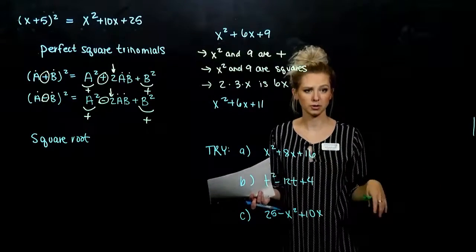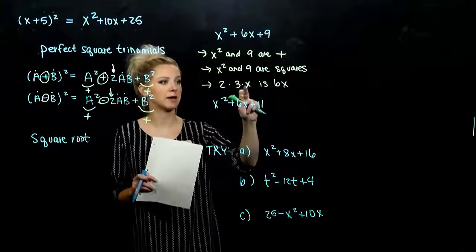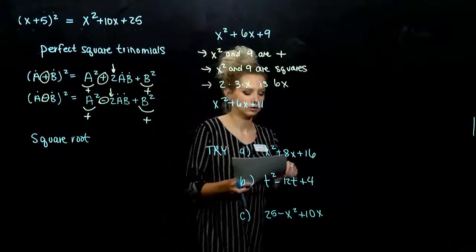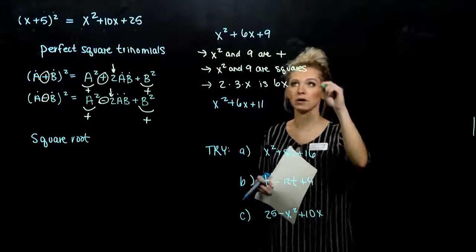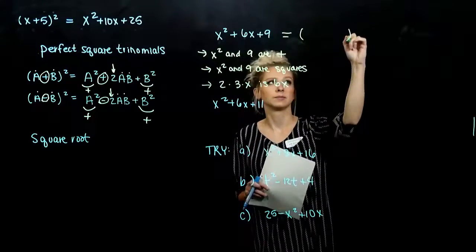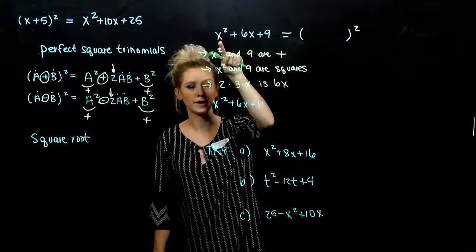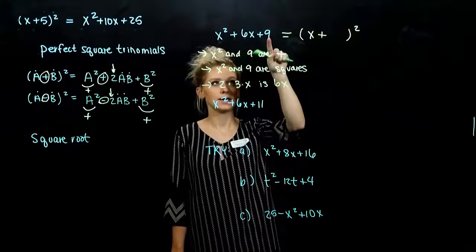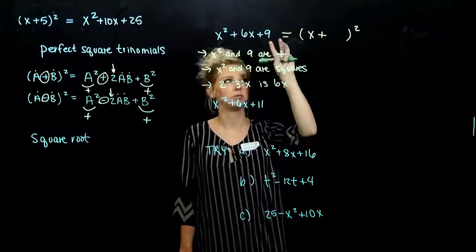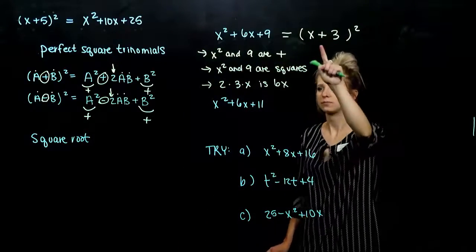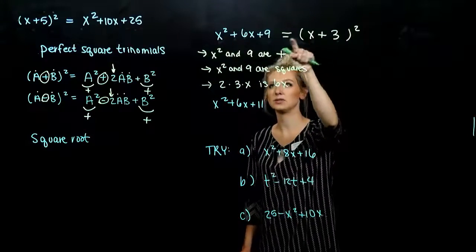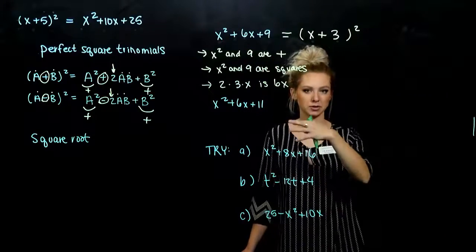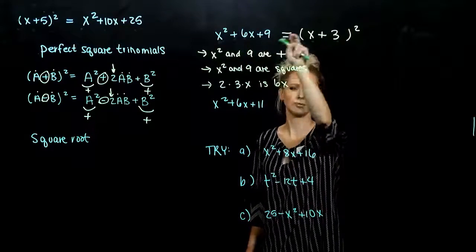Is it a perfect square trinomial? Yes, because I've got 2 times my first factor and one of the factors here — that gives us our middle. So yes, it's a perfect square. Taking the square root of the first term goes here, the sign was positive so a positive goes there, and the square root of 9 is 3. If I have 2 times the first times the second, do I get that middle term? Yes. Once we start recognizing the pattern, we can jump from there to there, saving a lot of time.